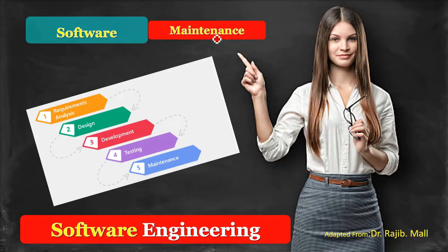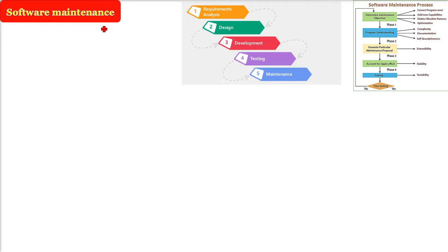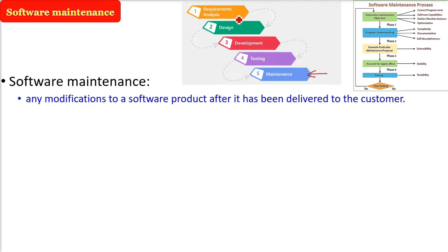In software engineering, we are talking about software maintenance. Maintenance means keeping the object or anything working. The product is already being made; now you need to clean it, polish it, and keep it running. This is the last phase of SDLC. All these phases — software is being delivered, deployed — and now the maintenance activity will only start after the delivery. Software maintenance is any kind of change or modification to a software product or system after it has been delivered to the customer or end user.